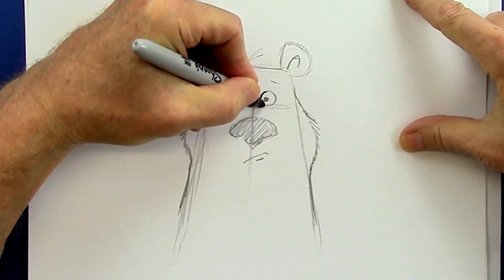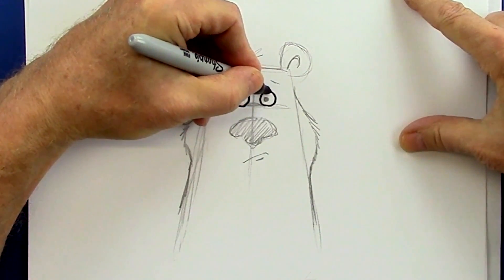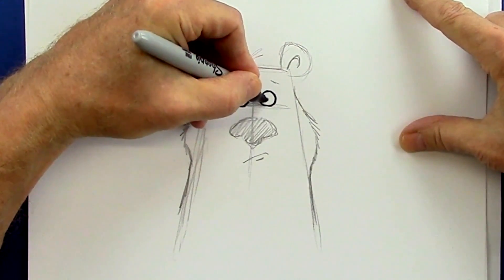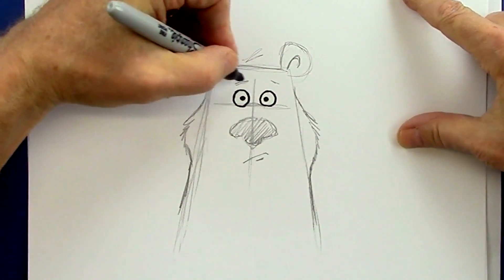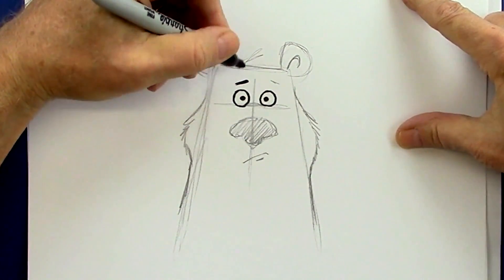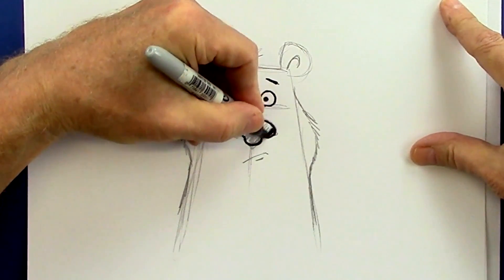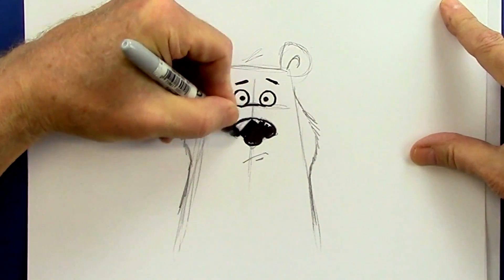These are just circles and they do not have to be perfect circles. Just any kind of circle is fine. Rising eyebrows coming together. Color in black. Makes it stand out a little more.